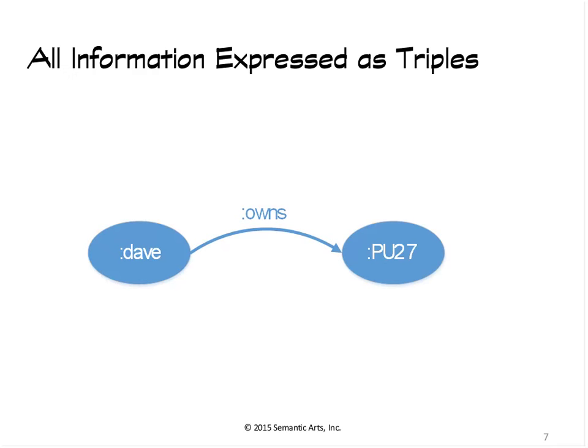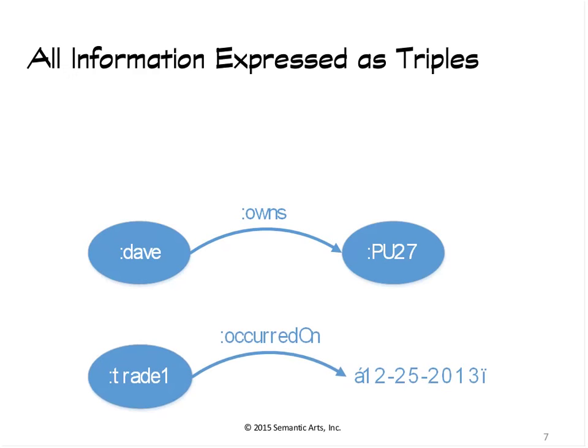There's one variation where only the thing on the right can be a literal. So the structure is either URI, URI, URI, or URI, URI, literal. That's it. That's all the structure you need to know, because that's all the structure there is.